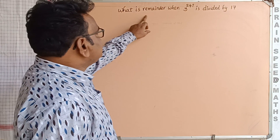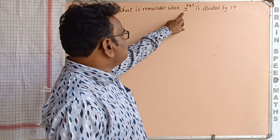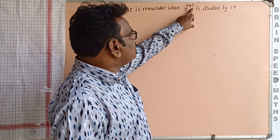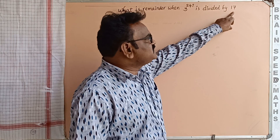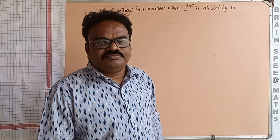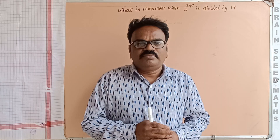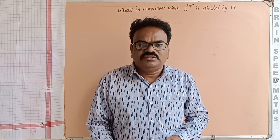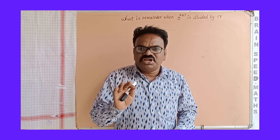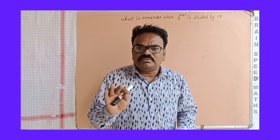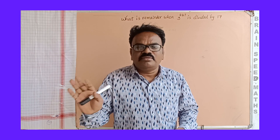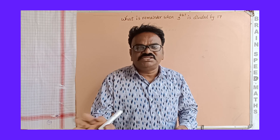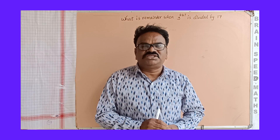What is the remainder when 3 to the power of 247 is divided by 17? To get this answer, we should not apply the binomial theorem. We should not apply cyclicity properties either.